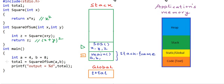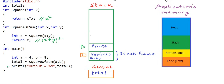Once again, when square of sum finishes, the control will come back to the line total equals square of sum, and main will resume. Now main will call printf, so printf will go to the top of the stack, printf will finish, and the control will come back to main, and then main will finish.